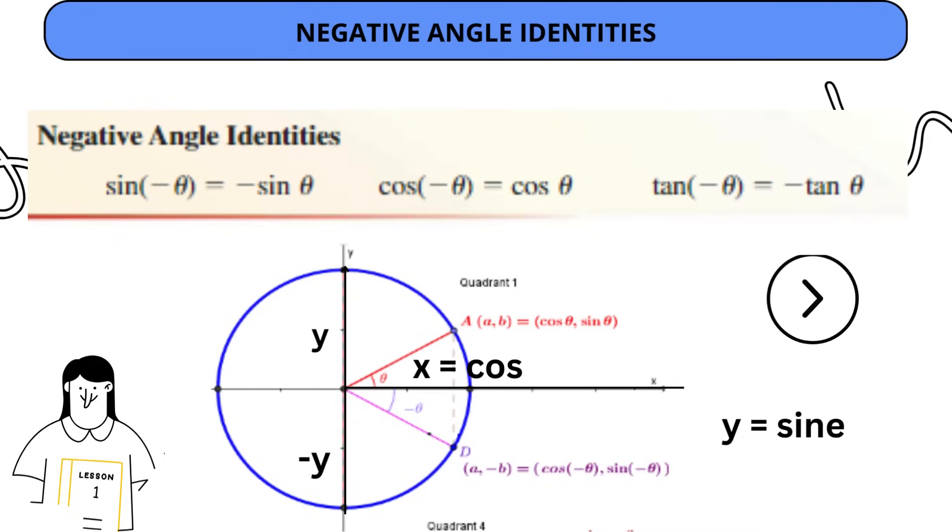Negative identities. Consider an angle theta making positive and negative theta angles. The x coordinate value is cos theta for both positive and negative angles—the x value, that is cos value, is positive. And the y value, that is sine value, is positive for positive angle and negative for negative angle. Hence cos is always positive for all angles, so reciprocal of cos, which is secant, is also positive for all angles.